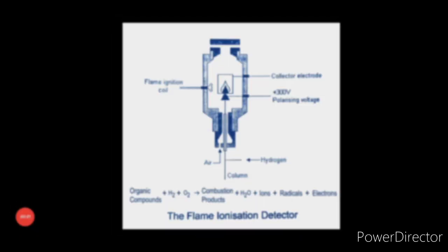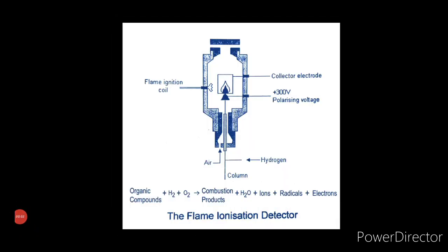Flame ionization detector. Let us understand the function of detector first. The function of detector is to sense and measure the separated components in the carrier gas flow leaving the column. The choice of detector depends on the nature of the sample and the level of analysis. Flame ionization detector is generally used because of its high sensitivity.